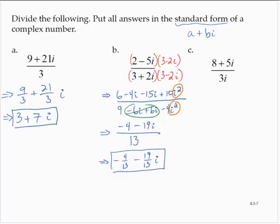All right, and exercise C gives us 8 plus 5i divided by 3i. Now, since there's no real part in the denominator, I don't really have to multiply by the conjugate.